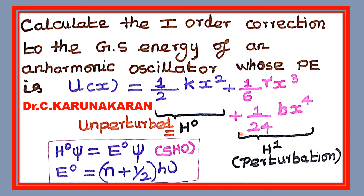For the simple harmonic oscillator, the Schrödinger wave equation is H₀ψ = E₀ψ. On solving this Schrödinger wave equation for the simple harmonic oscillator, or unperturbed Hamiltonian, the vibrational energy levels are obtained as E = (n + 1/2)hν, where n is the vibrational quantum number, and ν is the fundamental vibrational frequency.